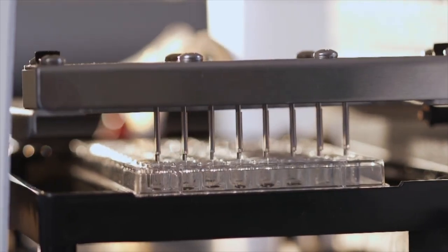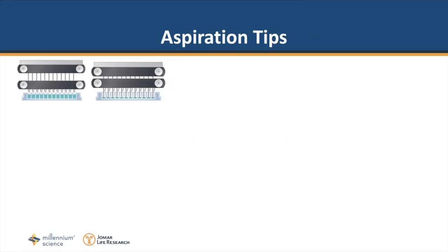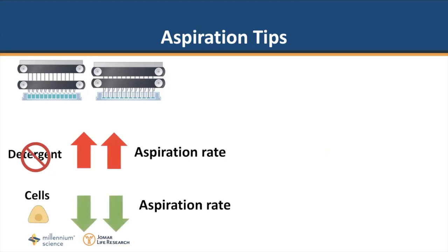Tip two centers on aspiration. Again, add a detergent to your wash buffer as this will make it easier to aspirate your wells. If you forego a detergent, you will need to increase your aspiration rate to help evacuate your well. For cell-based assays, I recommend reducing your aspiration rate to protect the monolayer integrity.